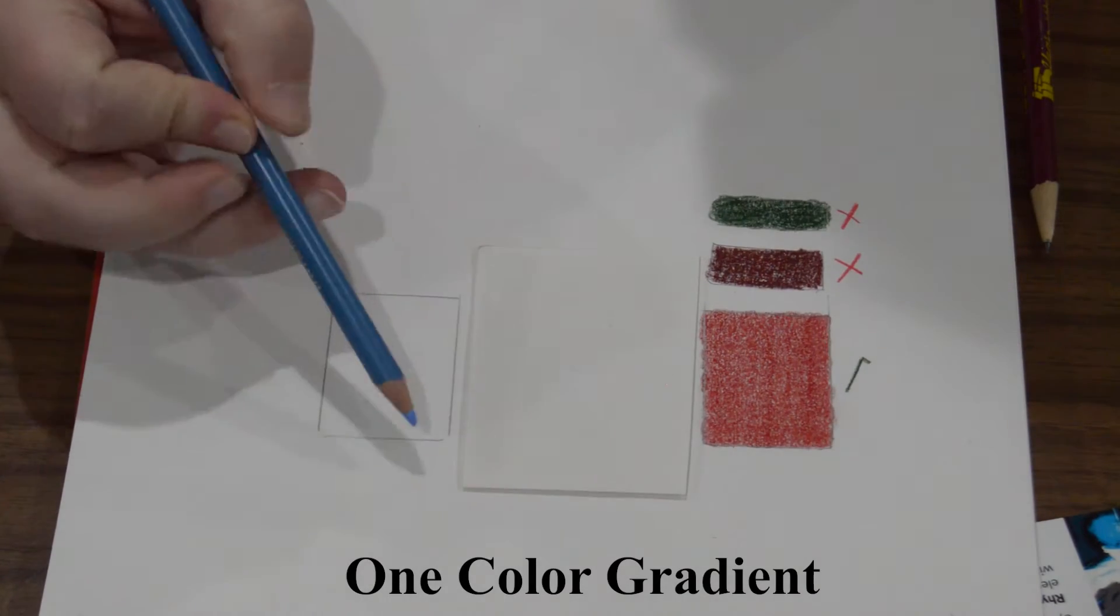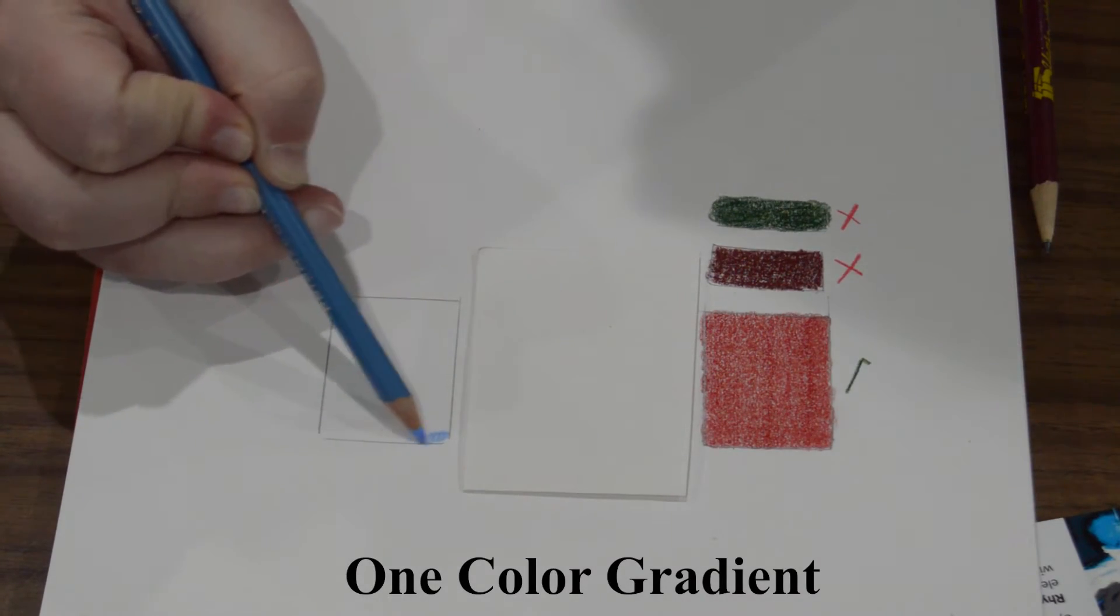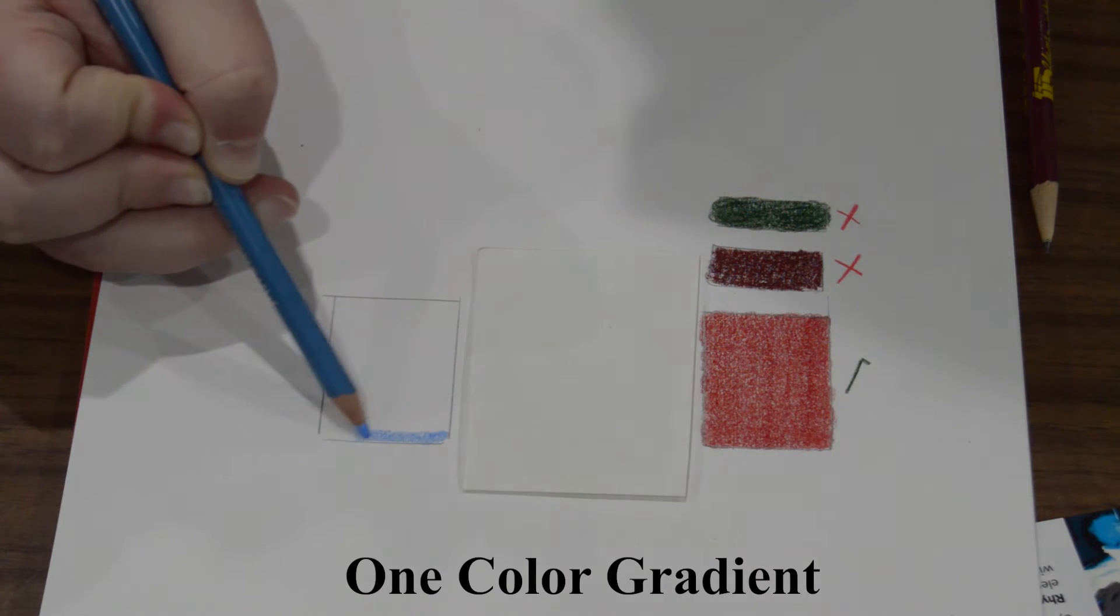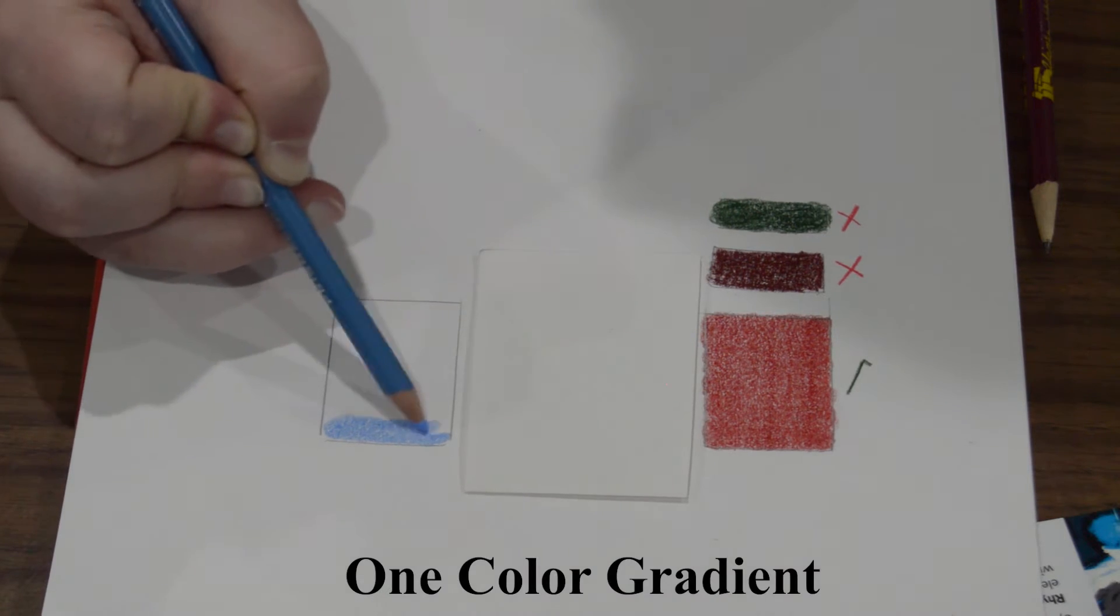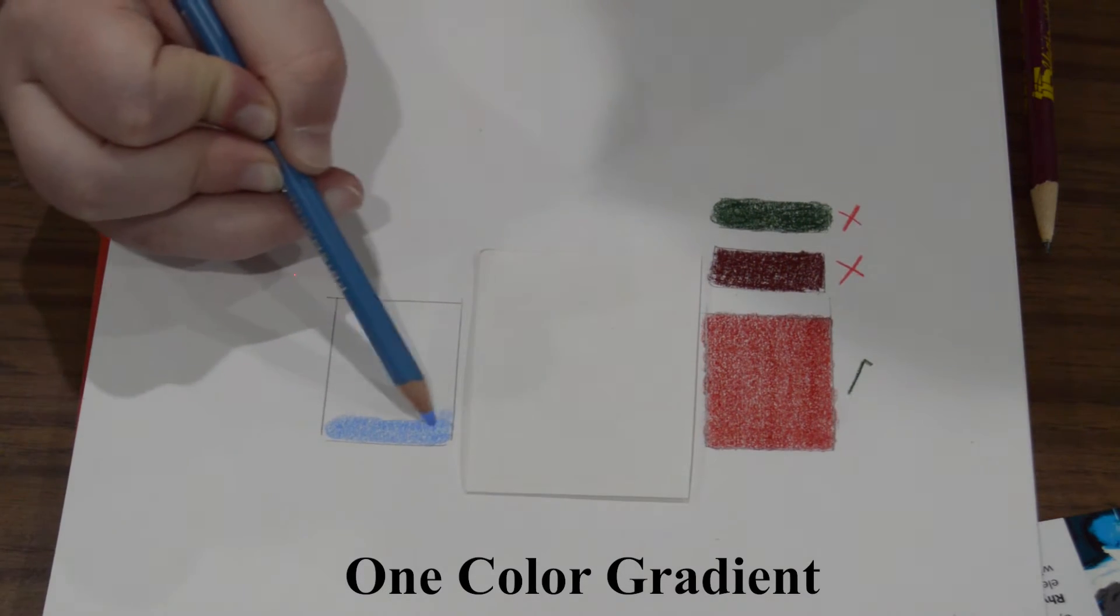A gradient goes from a dark color to a light color. For this gradient we're going to repeat the same steps from the solid color technique, but we want to lighten the pressure of our pencil as we go down.